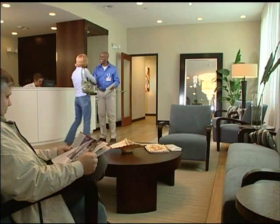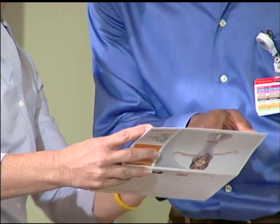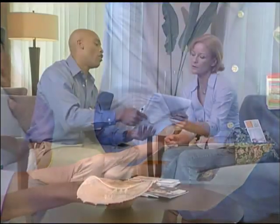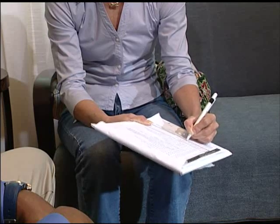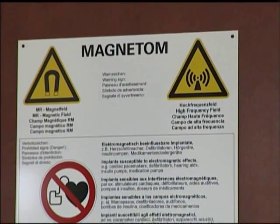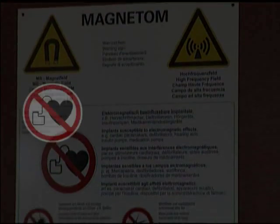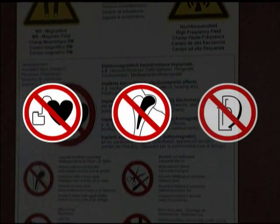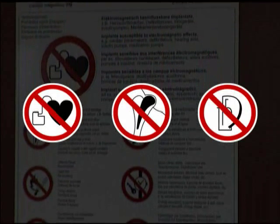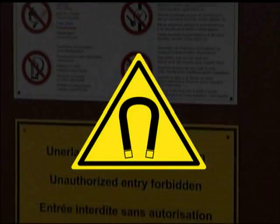On the day of your examination, it's a good idea to arrive a little early in order to complete your patient information records and to allow for a pre-examination screening. At this time, you may be asked some questions to make sure that you are eligible to undergo the MRI examination. For instance, patients with metallic foreign bodies or surgically implanted devices, like cardiac pacemakers and aneurysm clips, are not eligible. These devices may be adversely affected by the magnetic field.